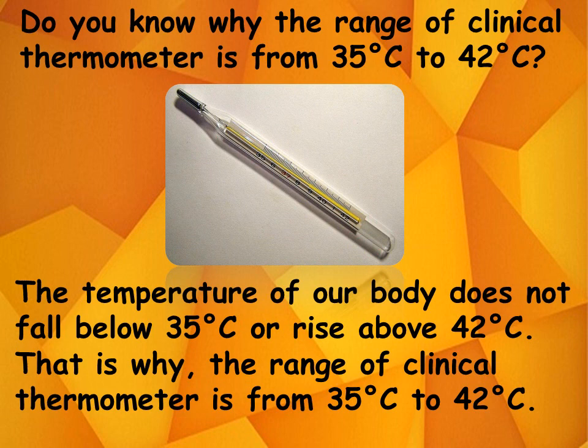Do you know why the range of the clinical thermometer is from 35°C to 42°C? The temperature of the body does not fall below 35°C or rise above 42°C. That is why the range of the clinical thermometer is from 35°C to 42°C.